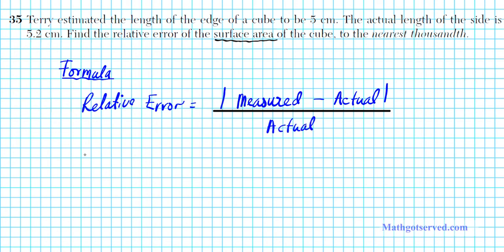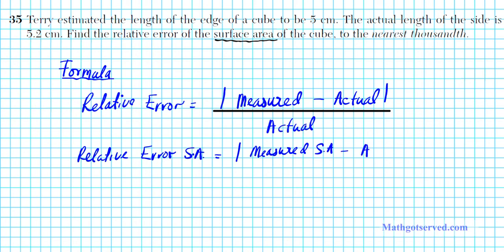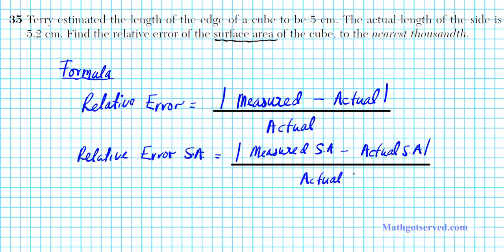So in the context of this problem, what we're going to be looking for is: the relative error of the surface area is going to be the absolute value of the measured surface area minus the actual surface area, divided by the actual surface area. We're basically applying the general formula to this particular situation, which is the surface area.